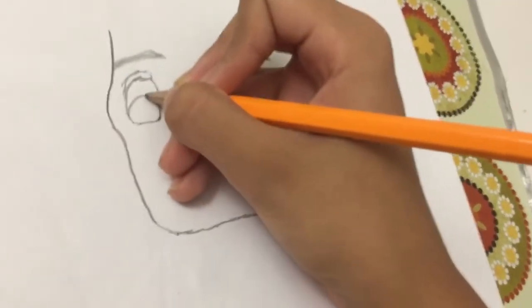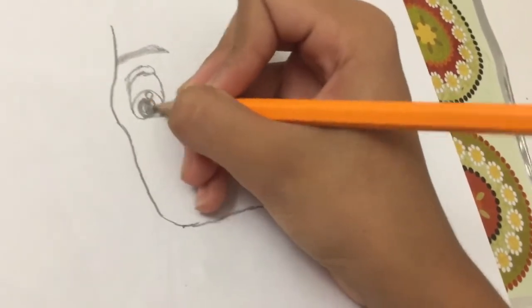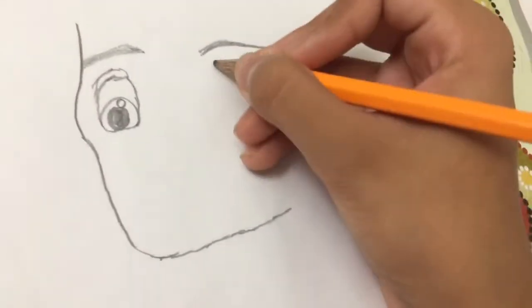Next, we're going to draw a pupil and iris. Put it in, like this. That's one eye. Let's go on the other one.